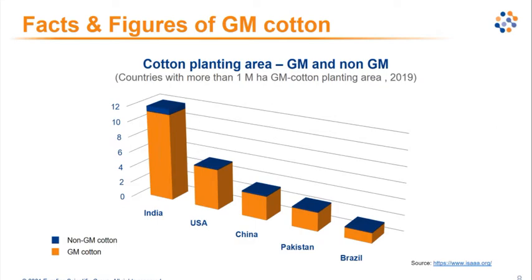When we talk about GM cotton and look at global cultivation, there are five main countries with over one million hectares of GM cotton planting area: India, the US, China, Pakistan, and Brazil. As shown in this graph, the great majority of the planting area is cultivated with GM cotton, while non-GM cotton represents only a small portion of the overall area.